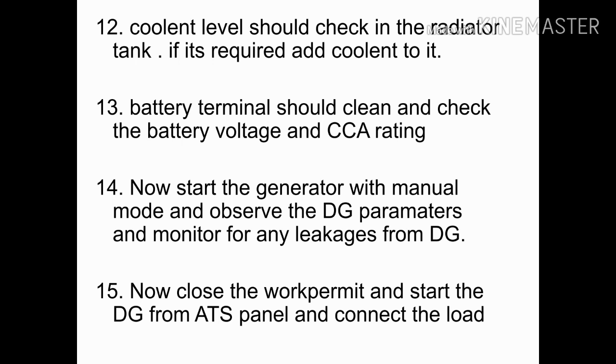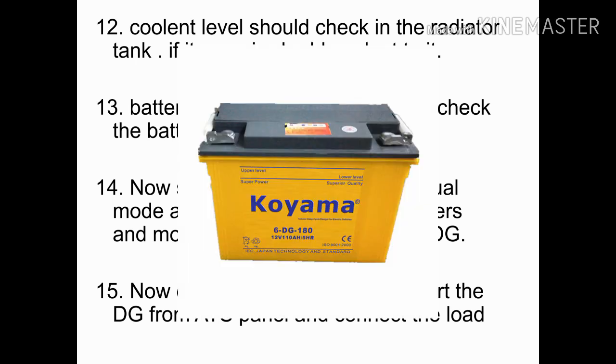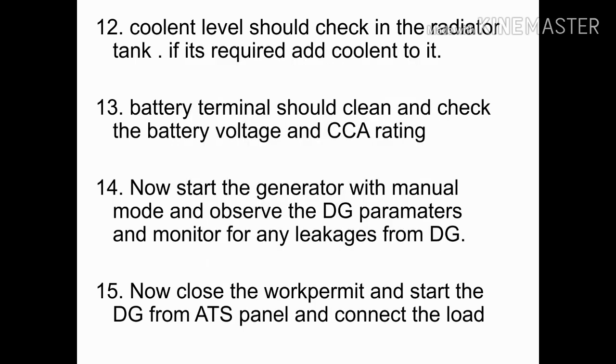The next step is battery maintenance. Clean the battery terminals, check the battery voltage and CCI rating. This DC battery is very important for the DC startup of the generator, so we need to focus on these batteries. Battery terminals should always be kept clean and have grease applied. Check battery voltages to confirm the batteries are in good condition, and verify the CCI rating as well.